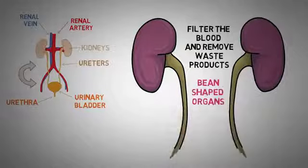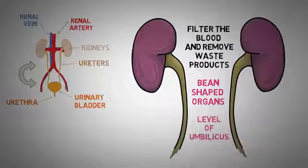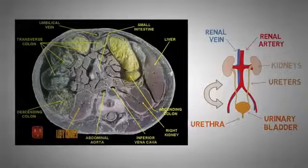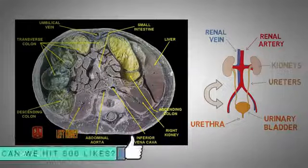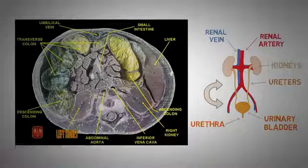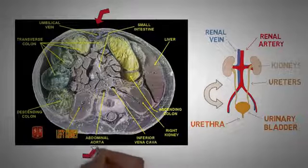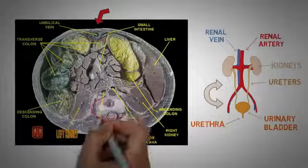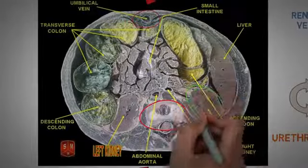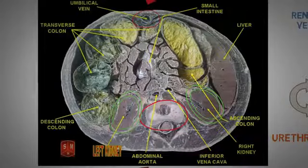The kidneys are bean-shaped organs that are present on each side of our spine, almost at the level of our umbilicus. Looking at a specimen cut section from the top angle, with the front side and rear side visible, you can note the position of the kidneys in the body. You can clearly see that the kidneys are actually present towards the rear or posterior aspect of the abdomen.